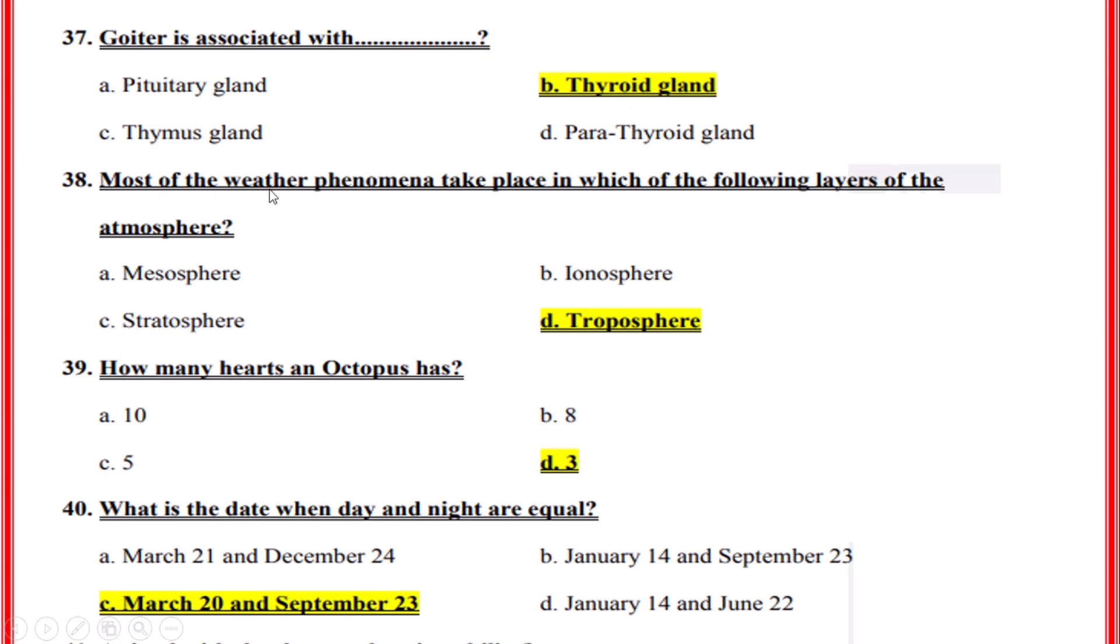Most of the weather phenomena take place in which of the following layers of the atmosphere? Correct option: D, Troposphere.